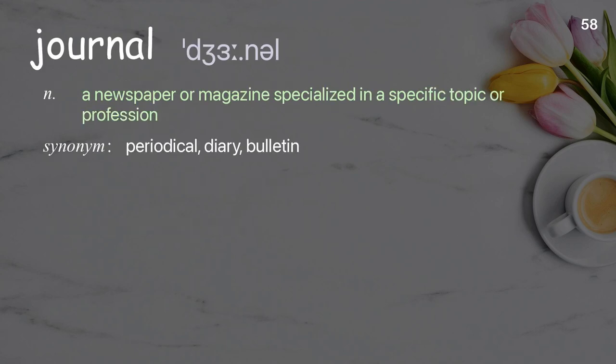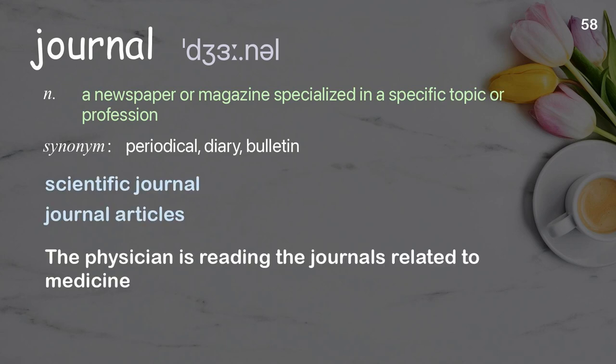Journal: A newspaper or magazine specialized in a specific topic or profession. Examples: Scientific Journal. The physician is reading the journals related to medicine.